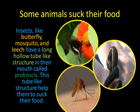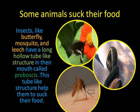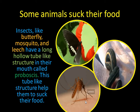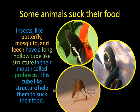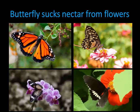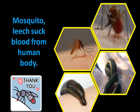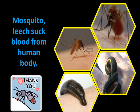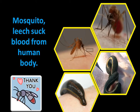Some animals like butterfly, mosquito and leech have got a hollow tube inside their mouth — a straw-like thing called the proboscis. This straw or tube-like structure helps the mosquito, leech or butterfly to suck the food. The food of the butterfly is nectar from the flowers. Mosquito and leech suck blood from the human body, and when the mosquito sucks blood it leaves a red spot and itch on the skin.